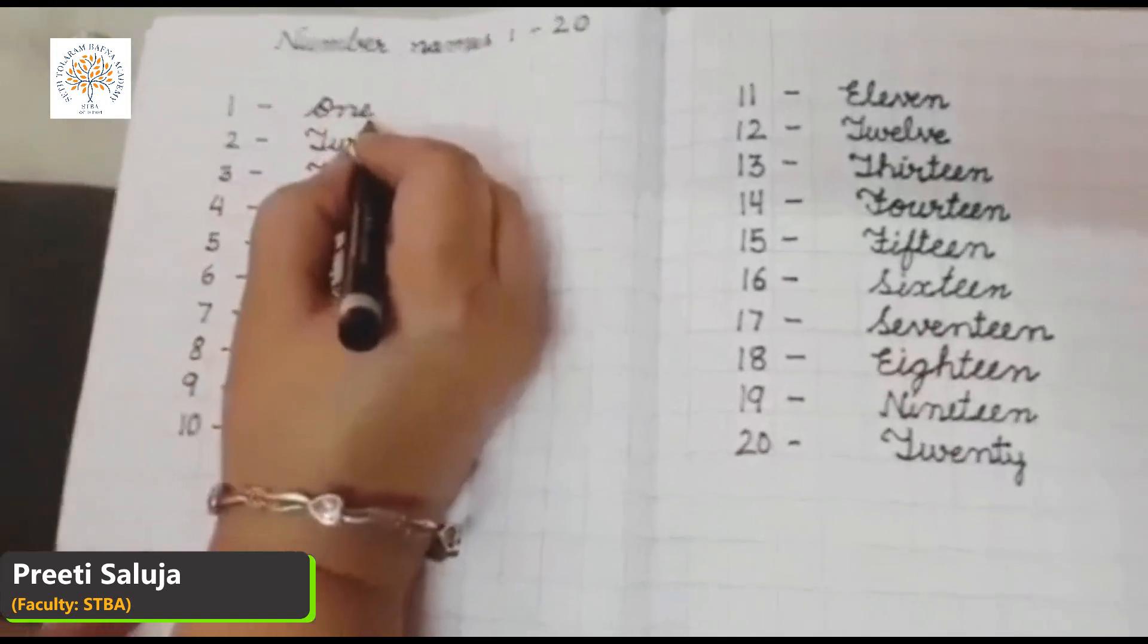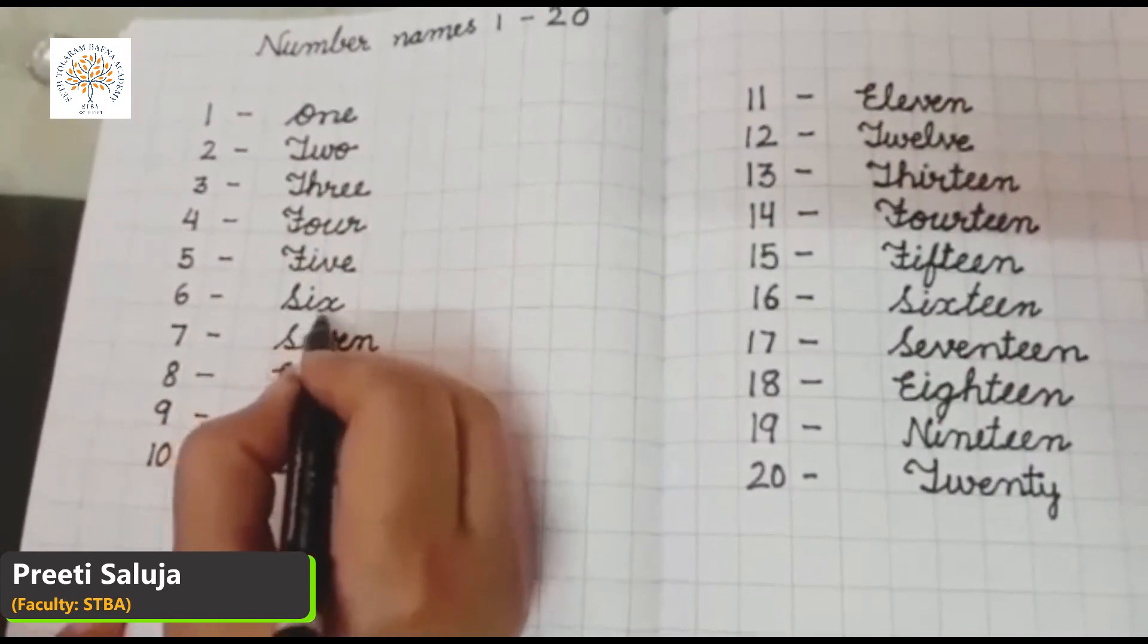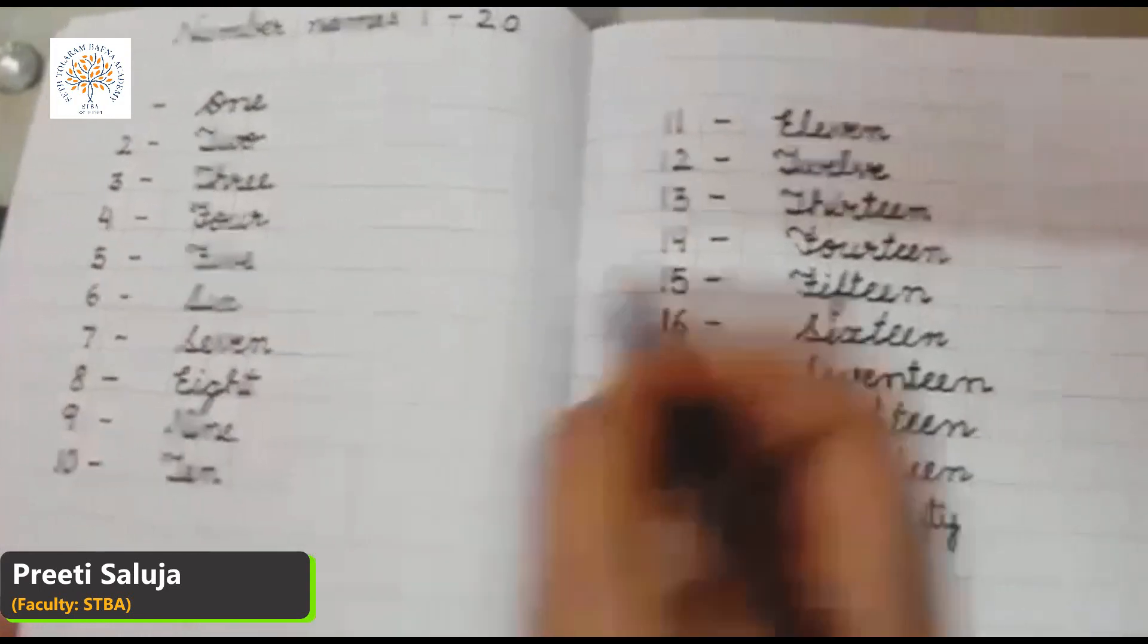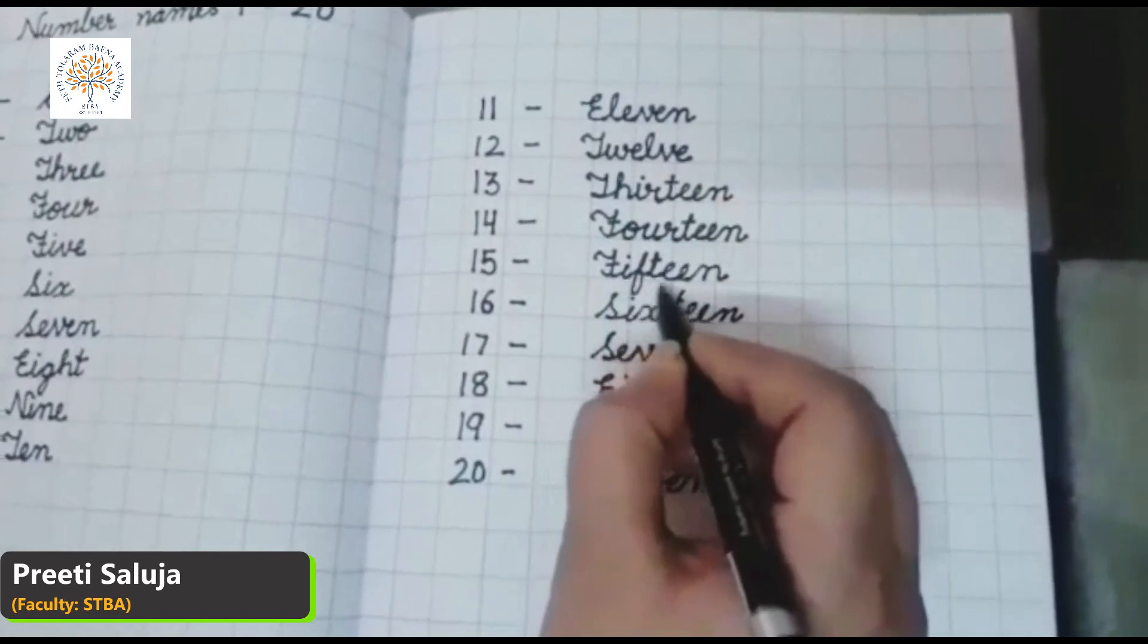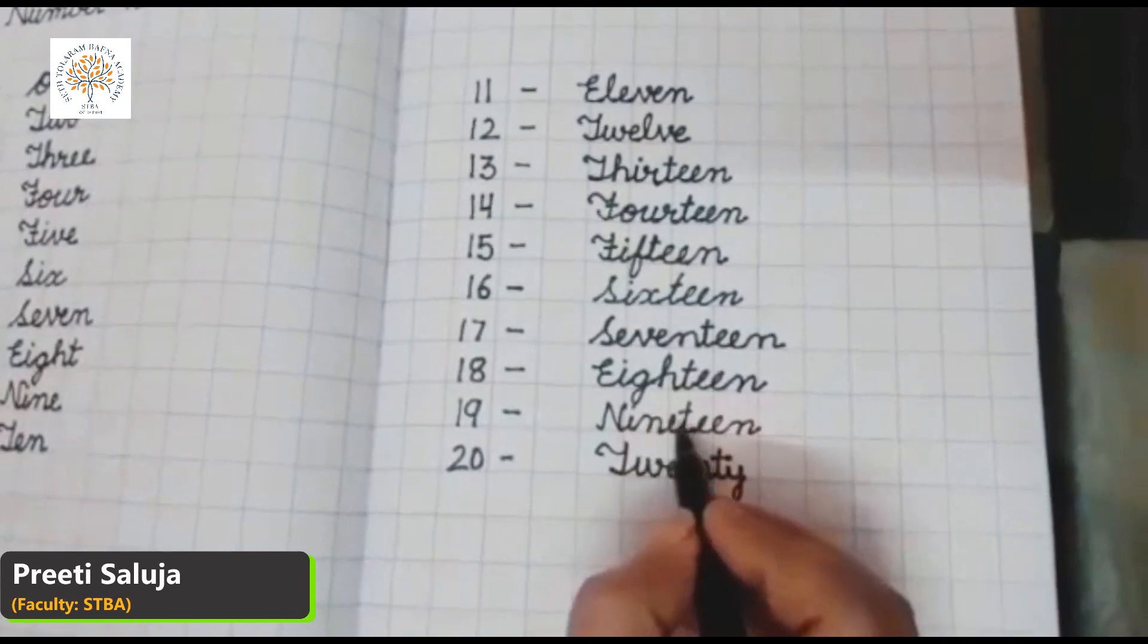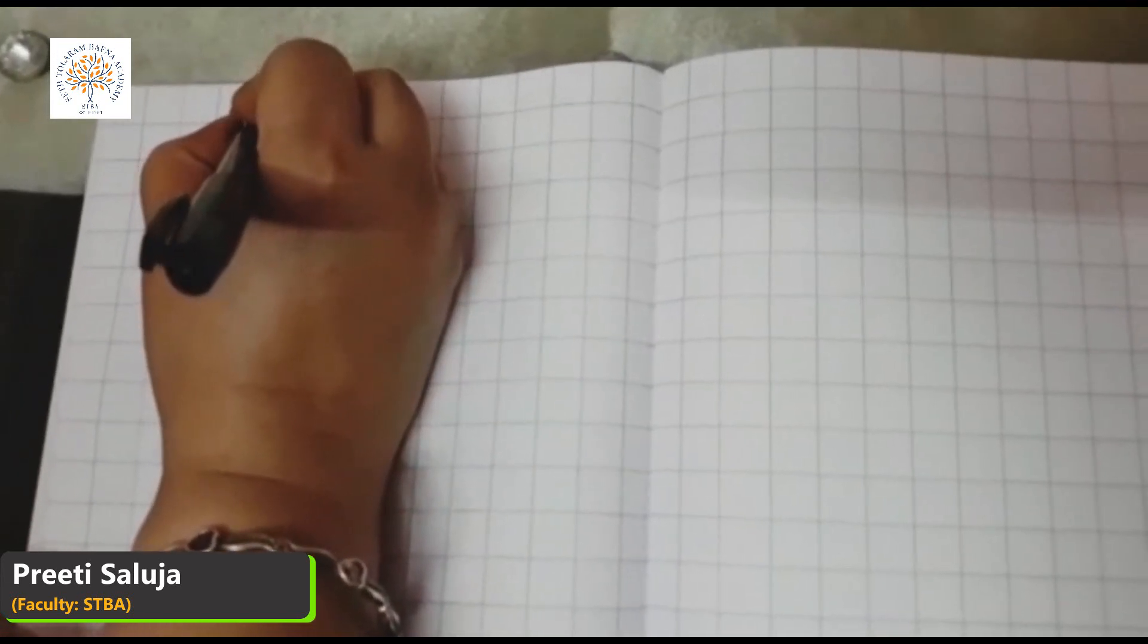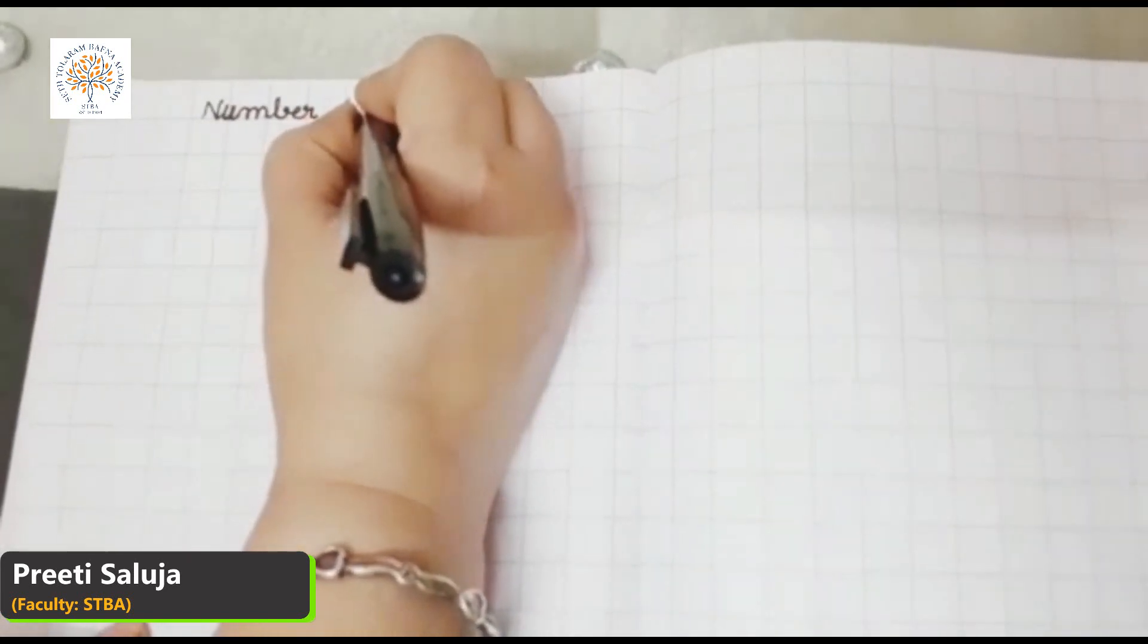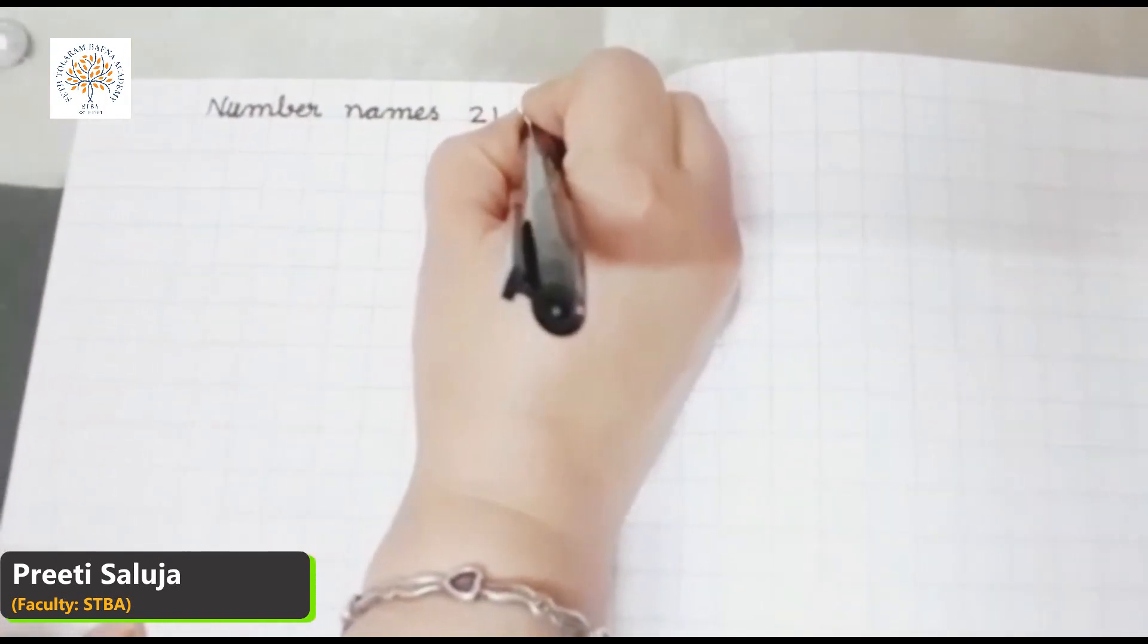Let's revise it. 1, 2, 3, 4, 5, 6, 7, 8, 9, 10, 11, 12, 13, 14, 15, 16, 17, 18, 19, 20. Let's start with number name 21 to 30. Number names 21 to 30.